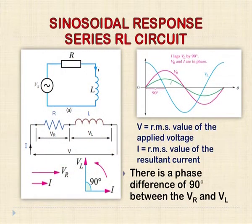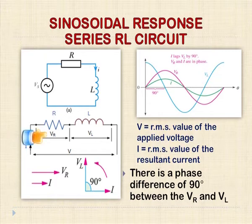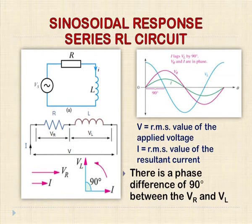Let us start with the sinusoidal response of a series RL circuit. As we can see in the figure, the inductor and resistor are connected in series with the AC source Vs. So the current flowing through both components is the same, but the voltage is divided in two parts. We get two components of voltage: one is the voltage across resistance Vr and another is the voltage across inductance Vl. The resultant voltage of these two components cannot be found mathematically since the vectors Vr and Vl have different phase relationships with the current.